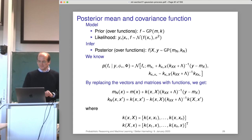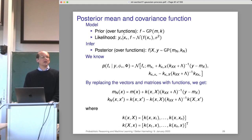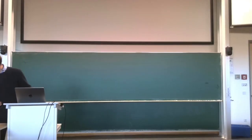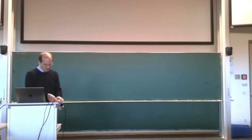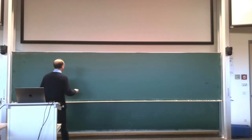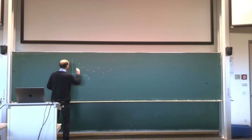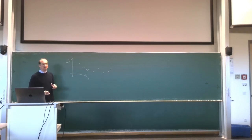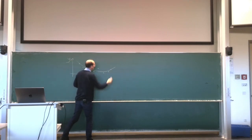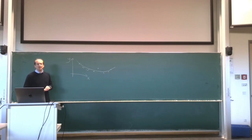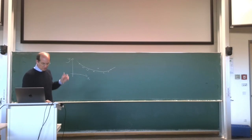As a reminder, last time we looked at these complicated, intimidating-looking expressions. The task is: given a 2D dataset where the X are the inputs and those are the outputs, in regression we are trying to fit a function through this. There are many possibilities — linear regression and other approaches — and Gaussian process is a very probabilistic, Bayesian way of approaching this problem.